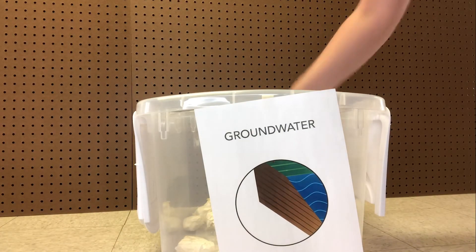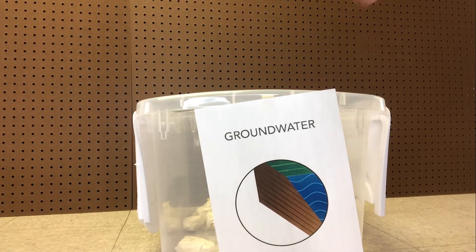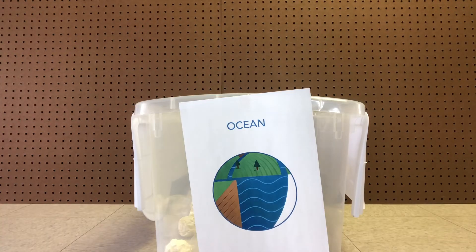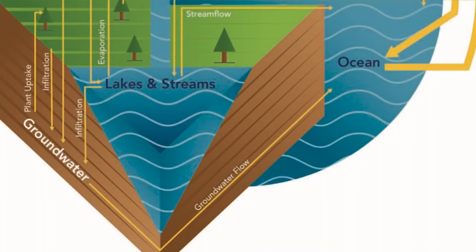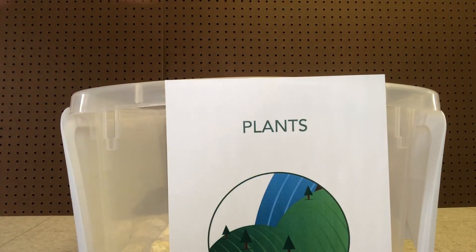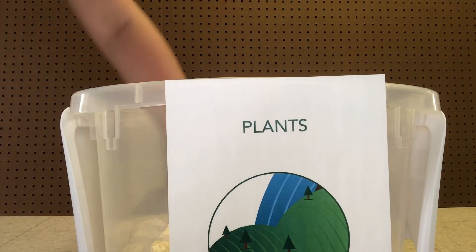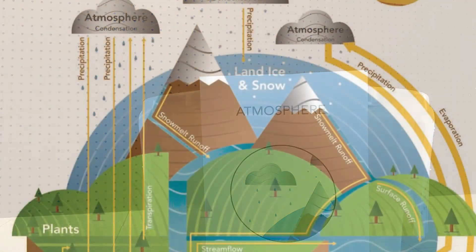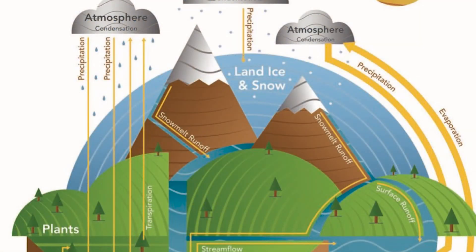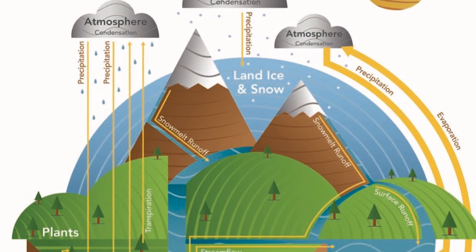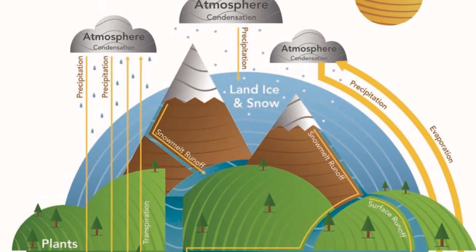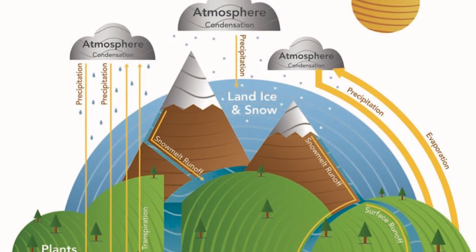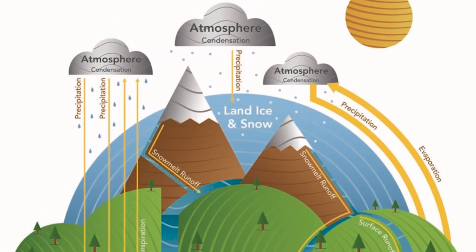For example, the groundwater group could give two water drops to the ocean through groundwater flow. Then the plants can give two water drops to the atmosphere through transpiration. If it's not their group's turn to move water, students should check that groups are moving water correctly, and make a buzzing sound if the other groups make a mistake.